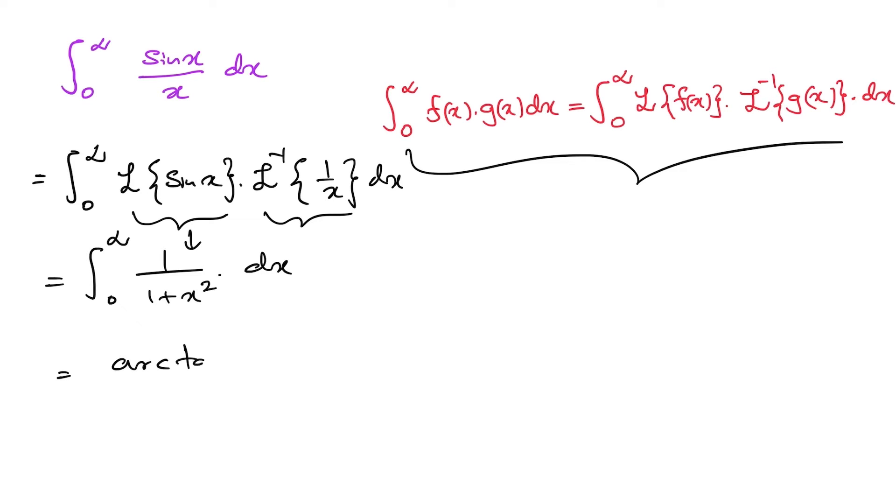Now this one we know, arctan of x from zero to infinity. Arctan of infinity we know is pi over 2.